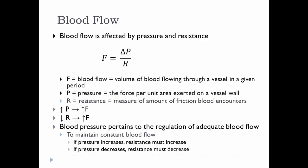Blood flow is affected by both pressure and resistance. Blood flow is defined as the volume of blood flowing through a vessel in a given period of time. Pressure is a force exerting on the wall of the vessel, and resistance is a measure of the amount of friction that the blood encounters. In this equation, blood flow equals a change in pressure, delta P, over resistance R.